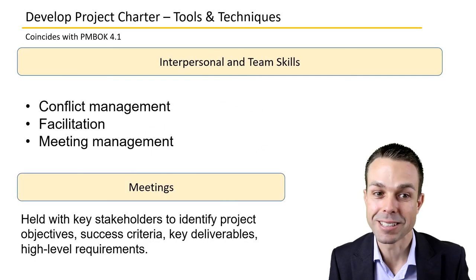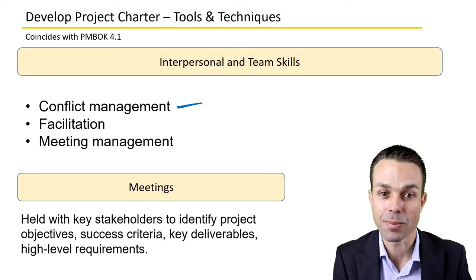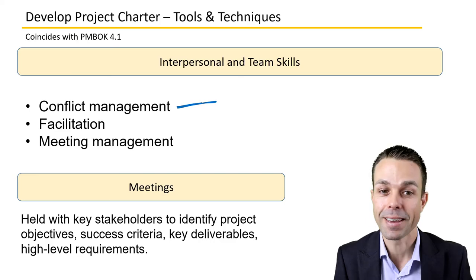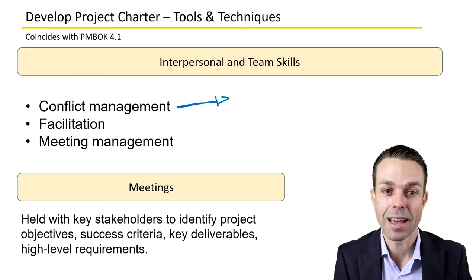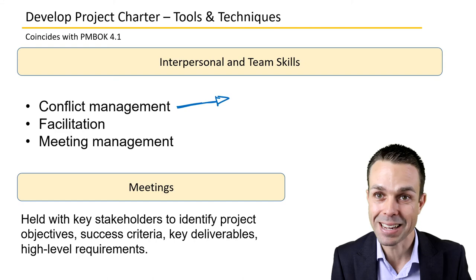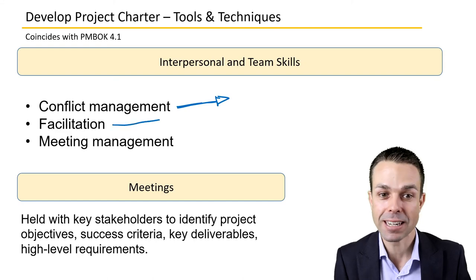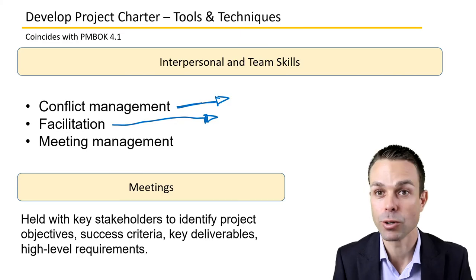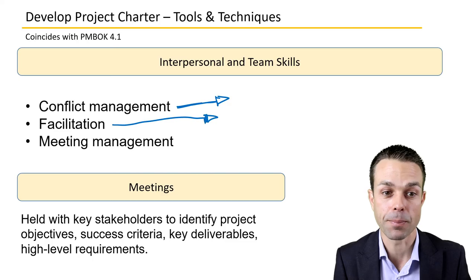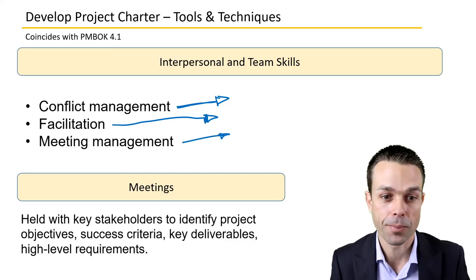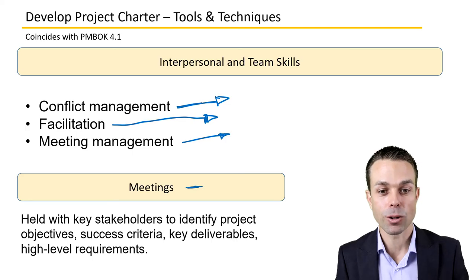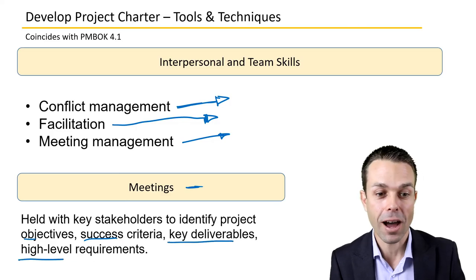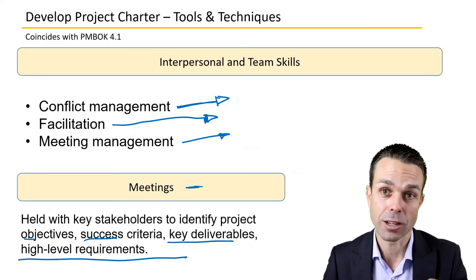You're going to need interpersonal and team skills. There might be conflict management — any time more than one person is involved there can be conflicting ideas, and that definitely has to be managed as a project manager. You'll need facilitation — presenting and gathering information through workshops. You'll need meeting management as a skill as well. Meetings are held with key stakeholders to identify project objectives, success criteria, key deliverables, and high-level requirements as part of this initiating document.